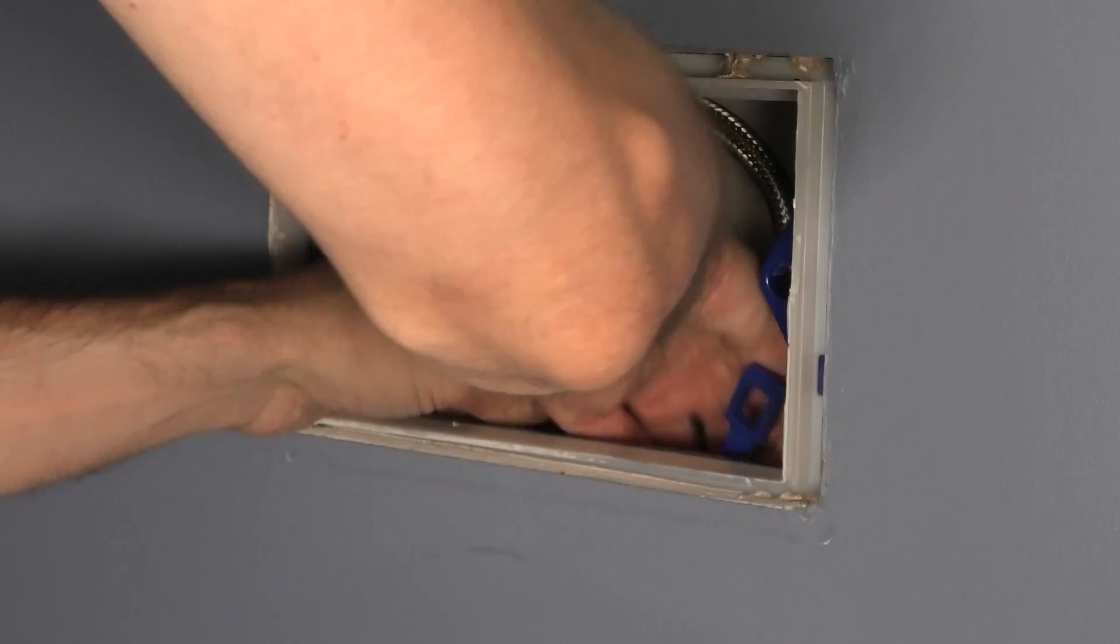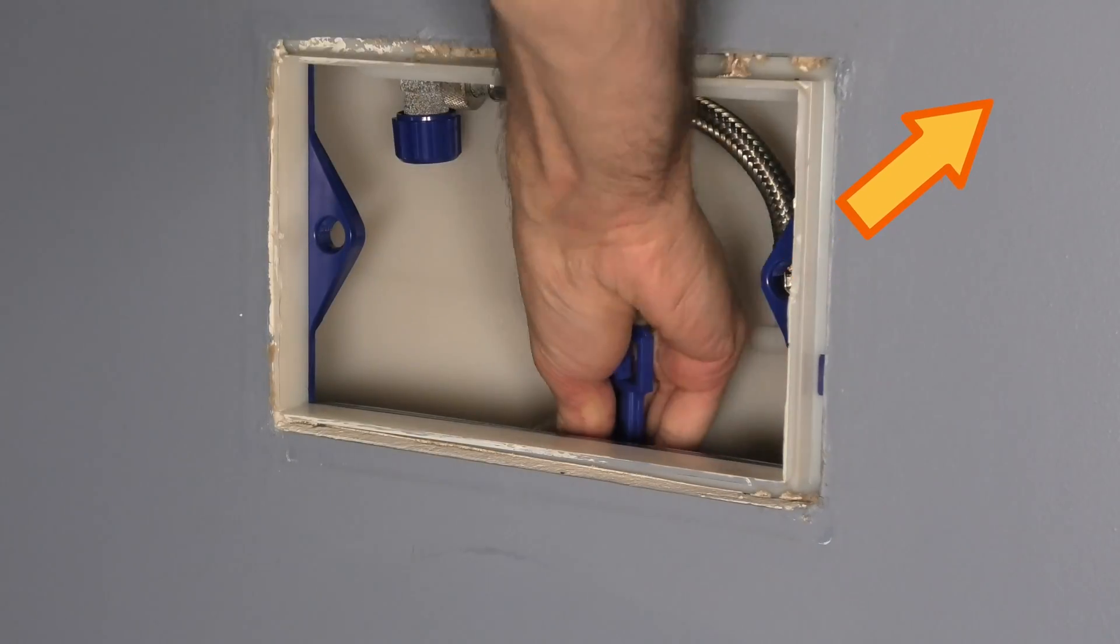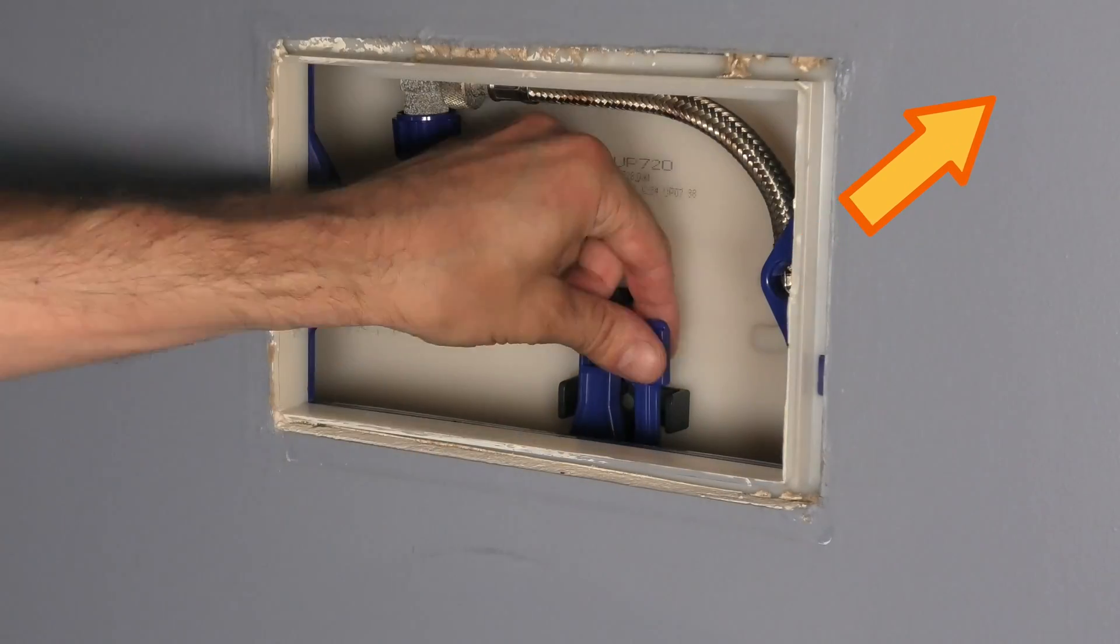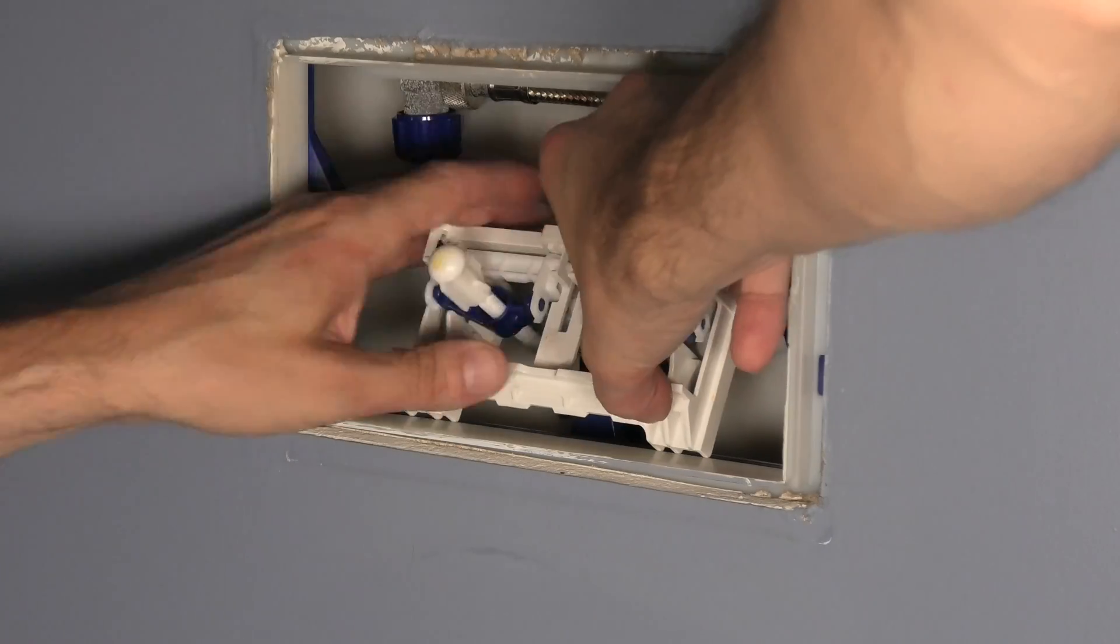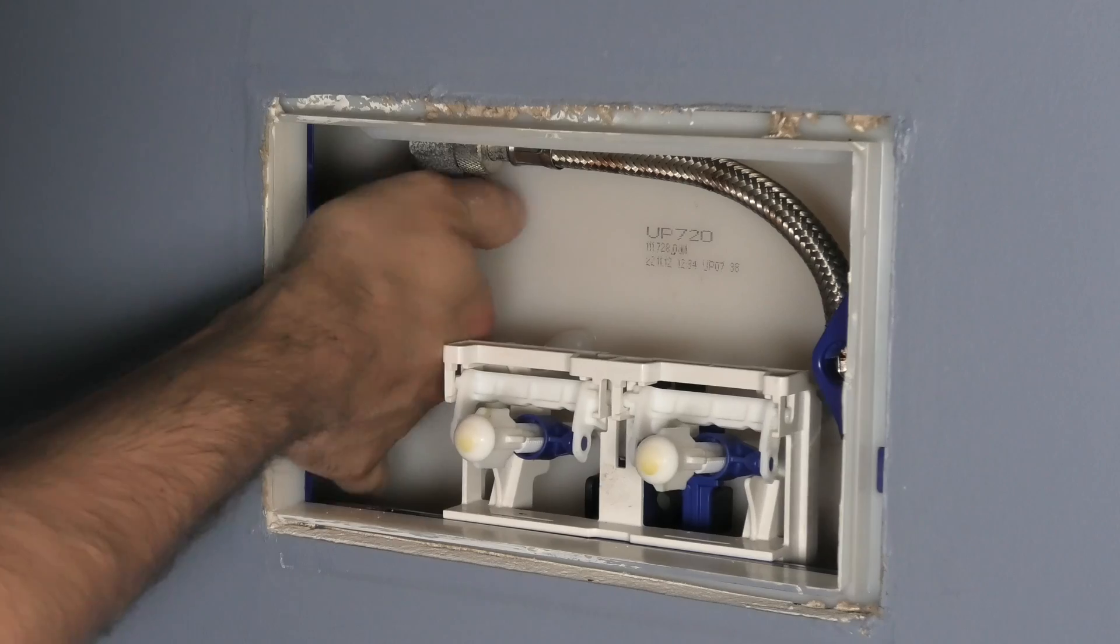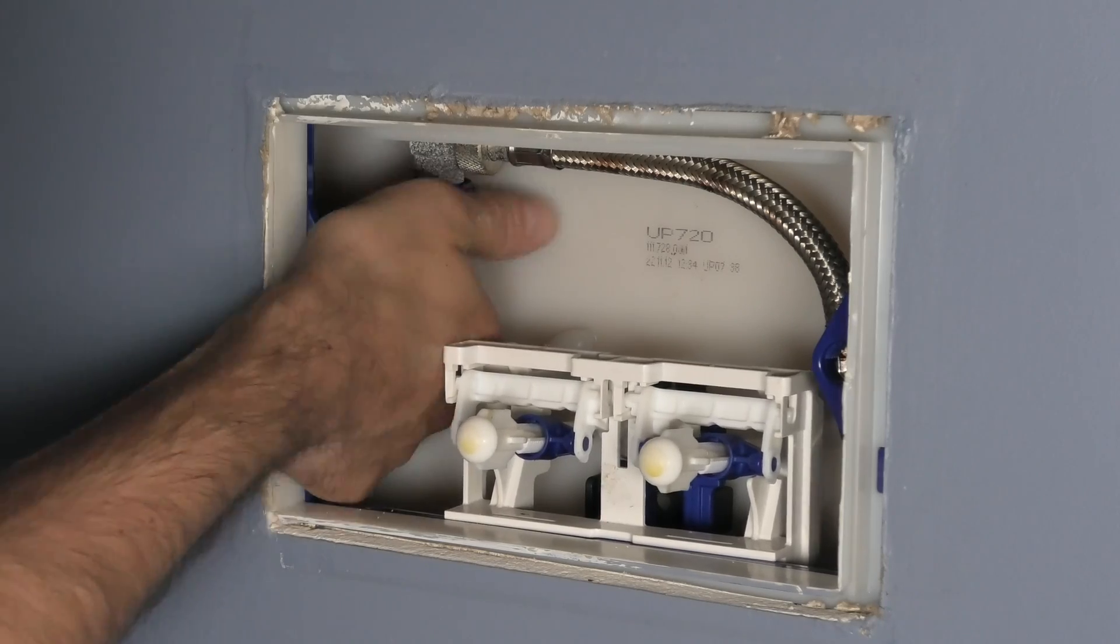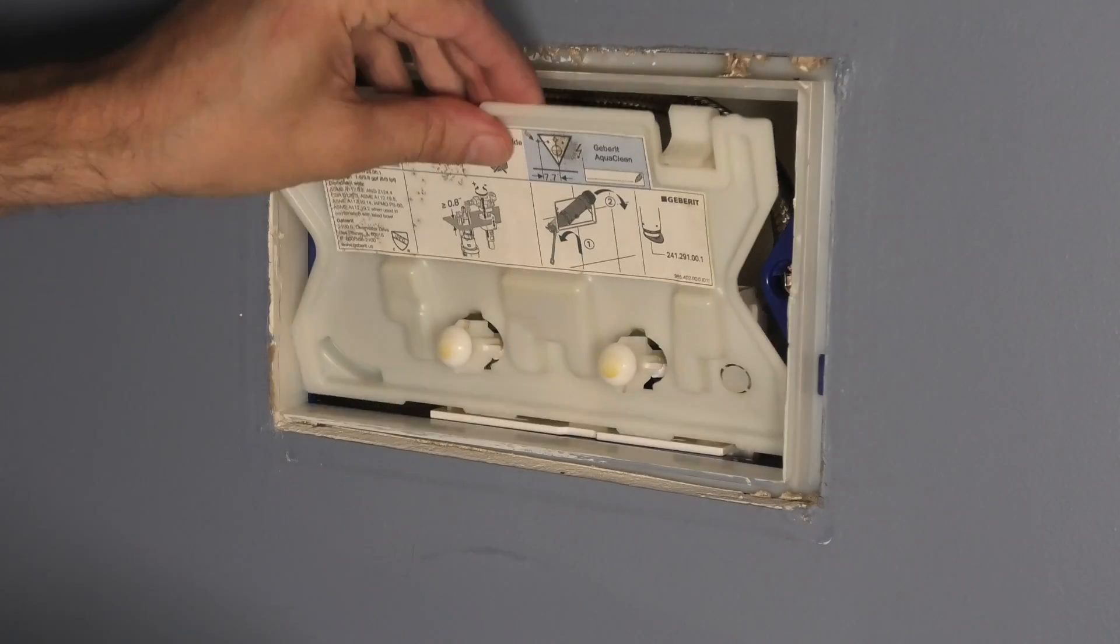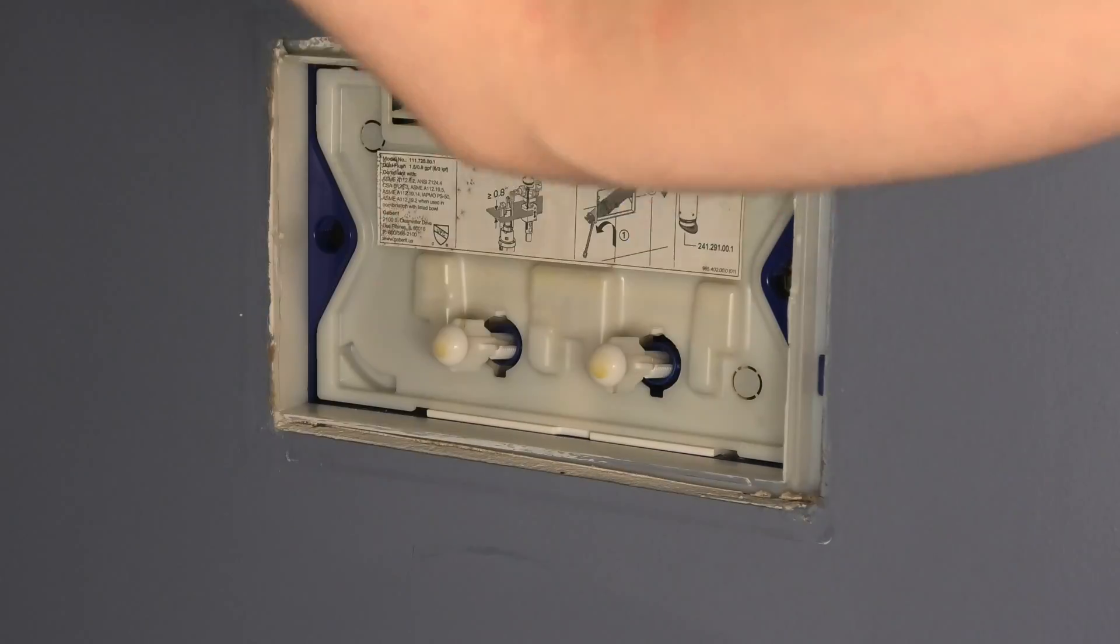If you do have this grey bracket and you do have trouble with reinstalling this then I am going to have here a different video that explains exactly how to take care of that plastic piece. And other than that don't forget to turn on the valve again so the tank is going to fill with water. And then just put the actuator plate back on and you are all set.